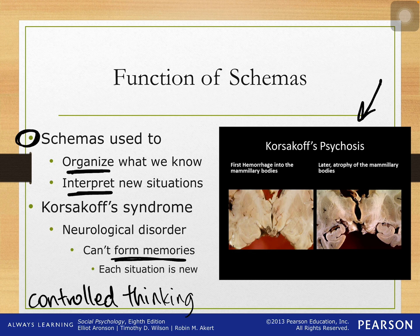We see Korsakoff syndrome in alcoholism because people with severe alcoholism tend to stop eating and just consume alcohol, so they don't get the nutrients they need. People with Korsakoff syndrome lose the ability to form new memories, which means they must approach every single situation as if they were encountering it for the first time — it doesn't matter if they've experienced it before. Every situation is new, and that means they have to engage in controlled thinking every single time they're living their life.